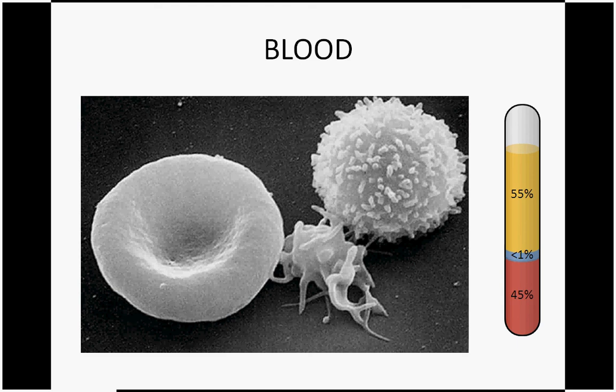Human blood. This liquid connective tissue fills our arteries and veins, perfuses our every tissue, and delivers vital oxygen to our cells. It carries nutrients to our muscles and takes carbon dioxide away. It helps to fight disease and clots to close wounds. Without blood, tissues and organs will quickly die. So what's in this vital fluid, and how does it function in our bodies?